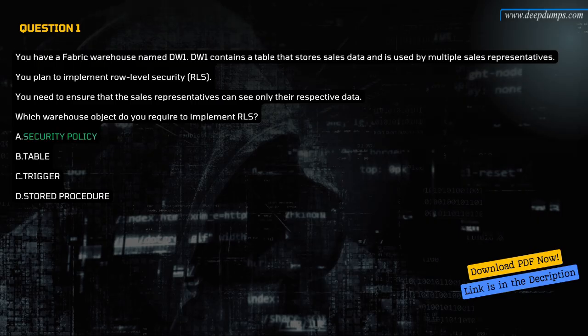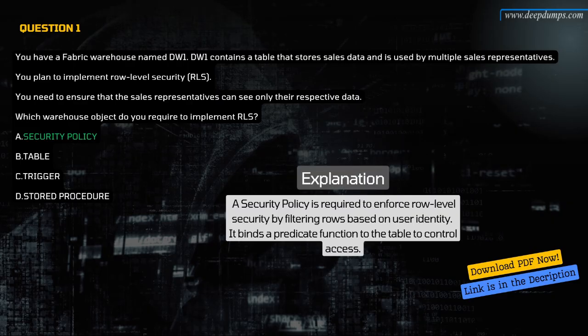The correct answer is A. Security policy. Explanation: A security policy is required to implement row-level security in a Fabric warehouse. The policy ensures that users can access only the rows they are authorized to see.